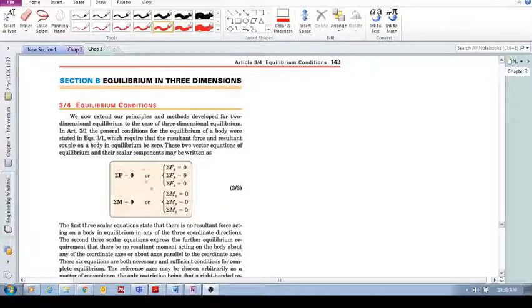Okay, so we've seen these are our equations of equilibrium. Sum of the forces in vector form equals zero. Sum of the moments equals zero. But in scalar form, we need these six equations to be fulfilled. These are independent equations.